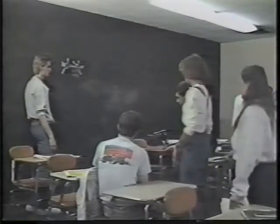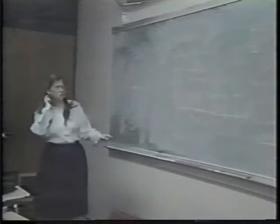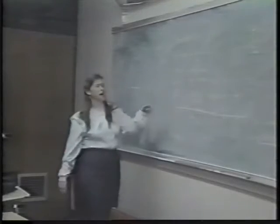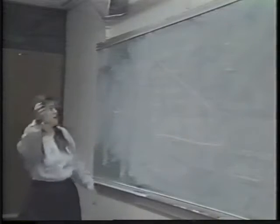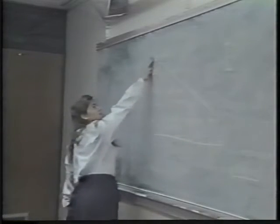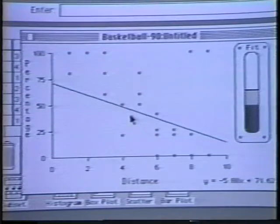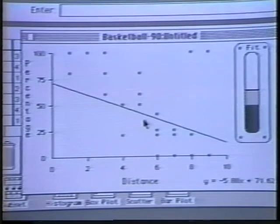The data was scattered, diverse, hard to decipher. So in order to interpret the data, we started by making a scatterplot on the blackboard. And when we looked at this data, there didn't appear to be any kind of trend or any kind of generalization we could make. We were able to get some better conclusions by using the computer and the software to help us.